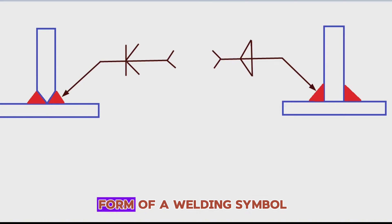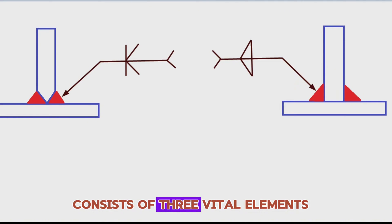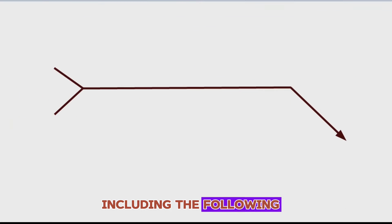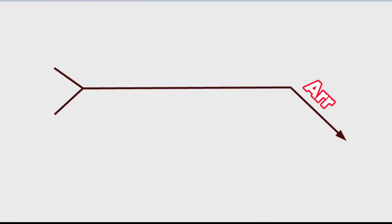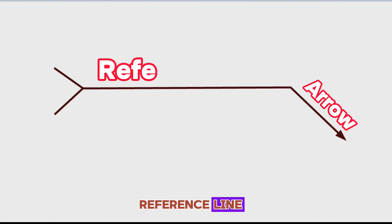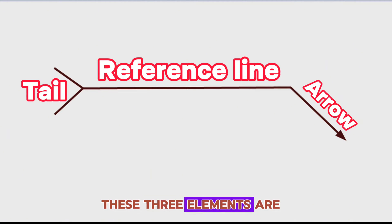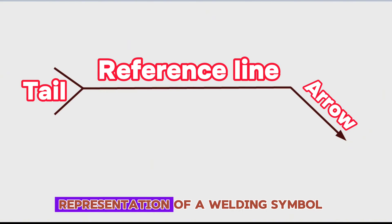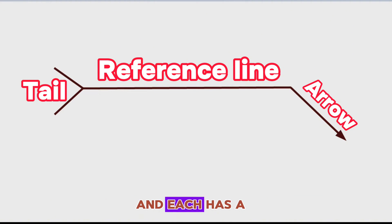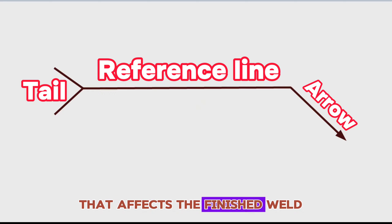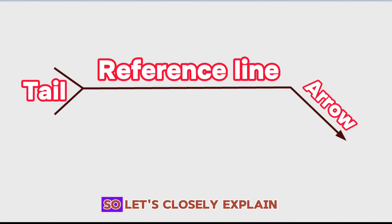The basic form of a welding symbol consists of three vital elements: Arrow, Reference Line, and Tail. These three elements are the most straightforward representation of a welding symbol, and each has a unique role that affects the finished weld, so let's closely explain what they mean and do.